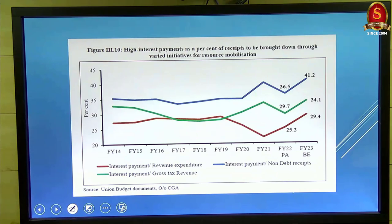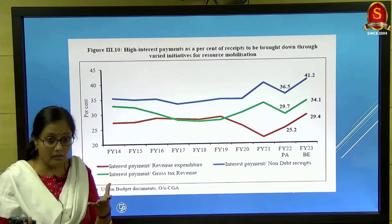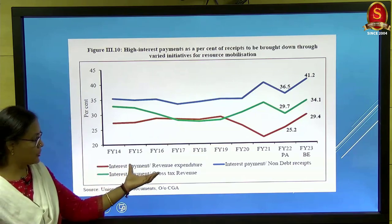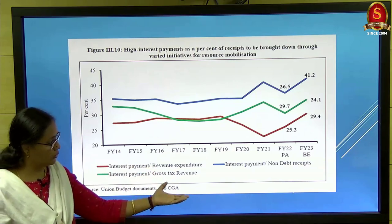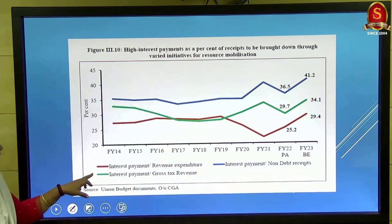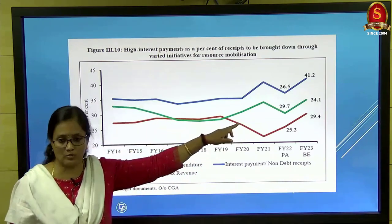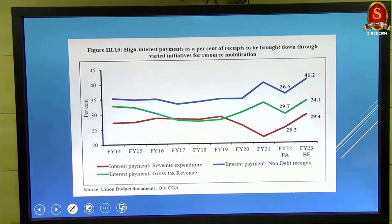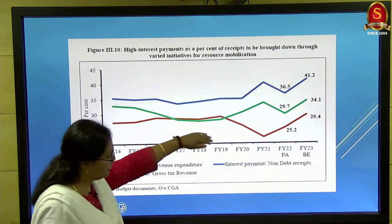The formula for primary deficit is: Fiscal Deficit minus Interest Payments. They are comparing interest payments as a proportion of revenue expenditure, gross tax revenue, and non-debt receipts (NDR). Interest payments as a share of revenue expenditure is around 30 percent. Out of every 100 rupees collected as taxes, 34 rupees go toward interest payments. As a proportion of NDR — which includes taxes, non-tax revenue, and NDCR — it's up to 41.2 percent, meaning a large share of all income goes to interest payments.